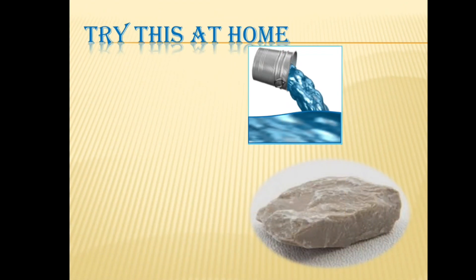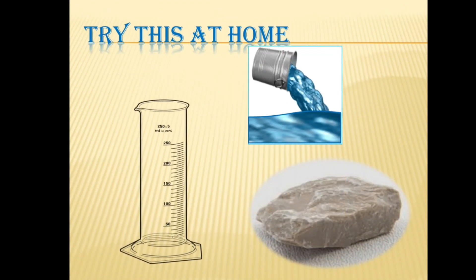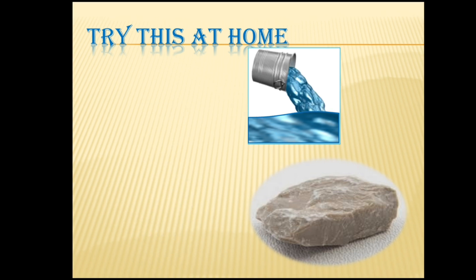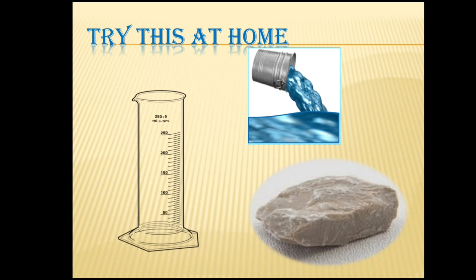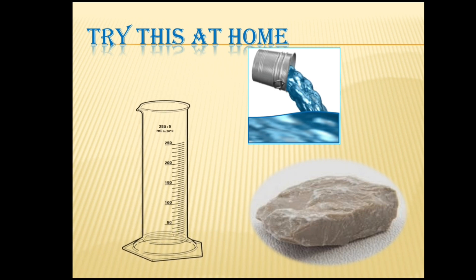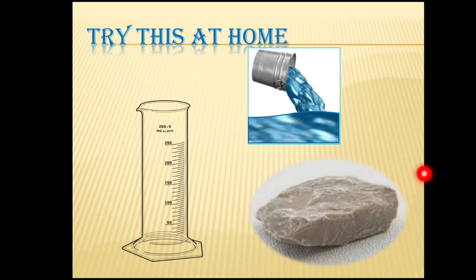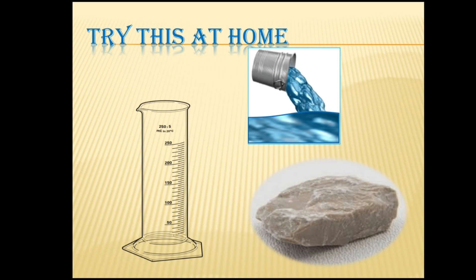Now everyone knows how to calculate the volume of an irregular object - you can try this at home! Take a glass, pour water in it and mark the point, then immerse an irregular shaped object. Observe how much the water rises - that space occupied by the irregular shaped object is its volume. This is the way to measure the volume of an irregular object.